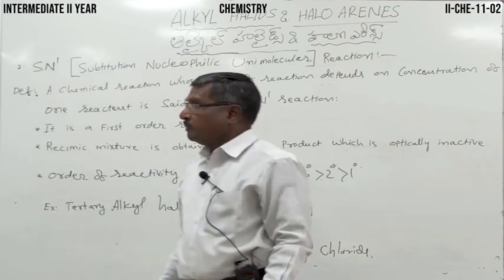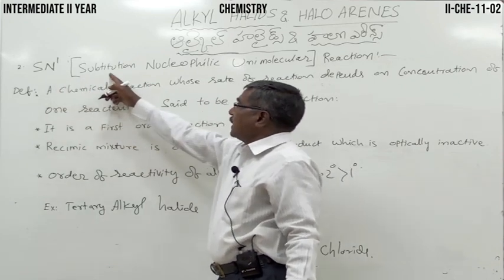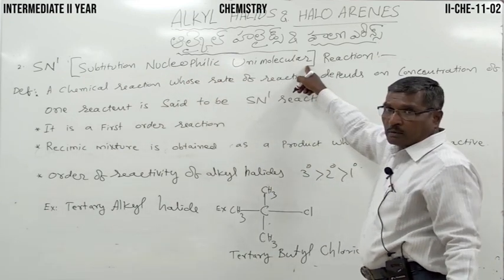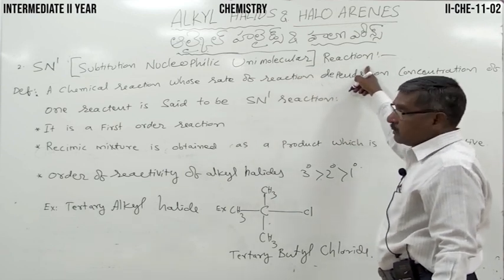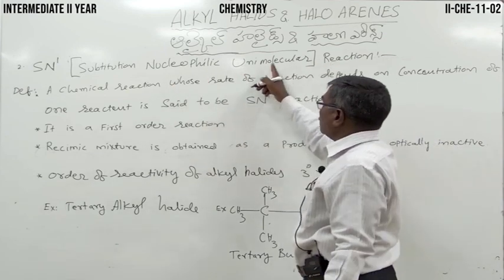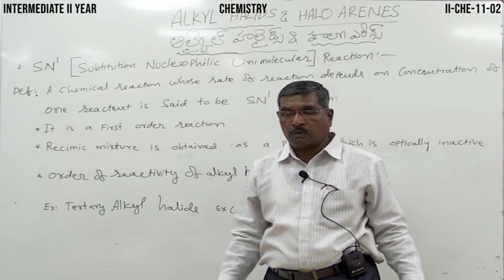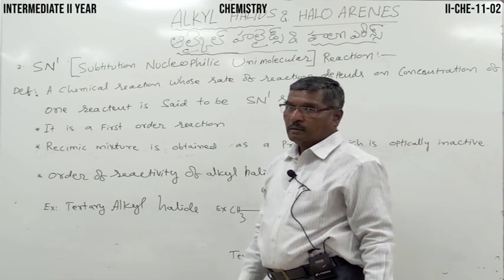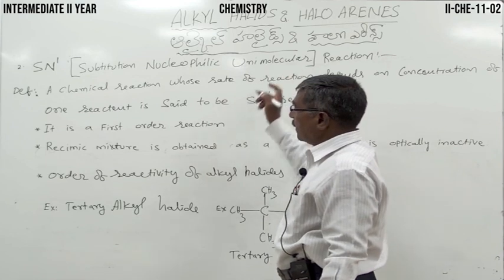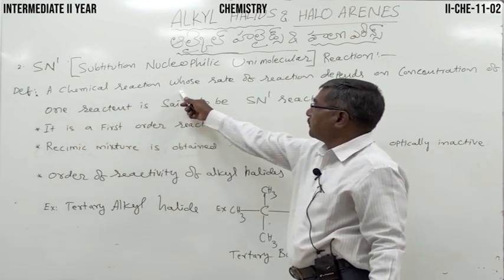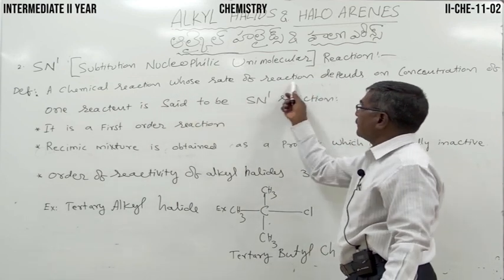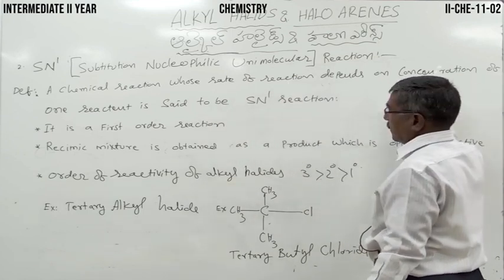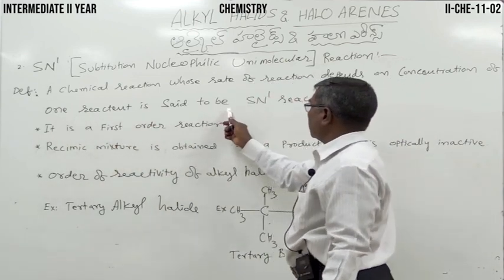The next reaction is SN1. S stands for substitution, N stands for nucleophilic, and 1 stands for unimolecular reaction. Substitution nucleophilic unimolecular reaction is said to be SN1 reaction. The rate of reaction depends on the concentration of only one reactant. That is why it is said to be unimolecular, and the order is 1.